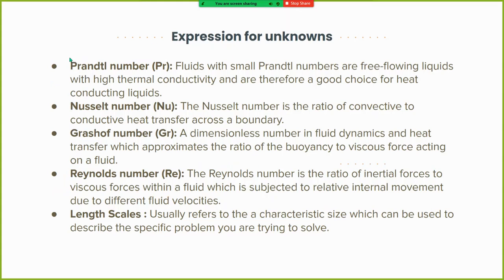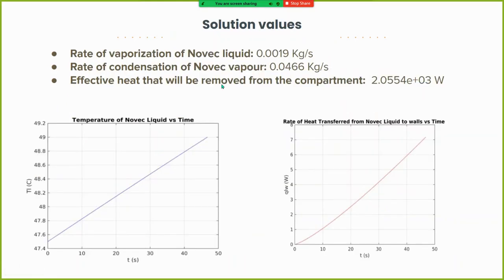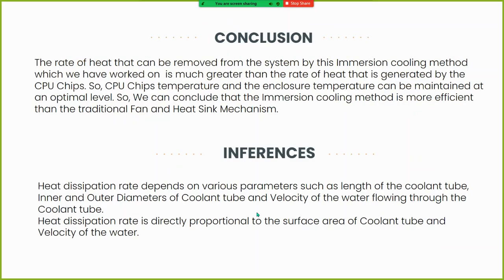The dimensionless numbers used include the Prandtl number, Grashof number, and Nusselt number, used to determine the values of different heat transfer processes, along with the relevant length scales. Moving to the final solution: we found the rate of vaporization of Novec liquid, rate of condensation of Novec vapor, and the effective heat removed from the compartment. The left graph shows Novec liquid temperature versus time, rising from initial temperature to its boiling point. The right graph shows the rate of heat transferred from Novec liquid to the walls versus time — also a roughly linear relationship.